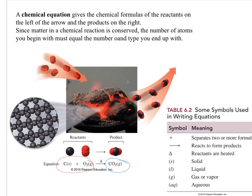If you look at this reaction where I'm making carbon dioxide, the arrow always divides the reactants on the left-hand side from the products on the right-hand side. You can have one reactant or multiple reactants — there's no set number, you just have to have a minimum of one. Everything to the left of the arrow is a reactant, whether there's 1 or 10. And everything on the right-hand side, whether it's 1 or 10, those are the products.